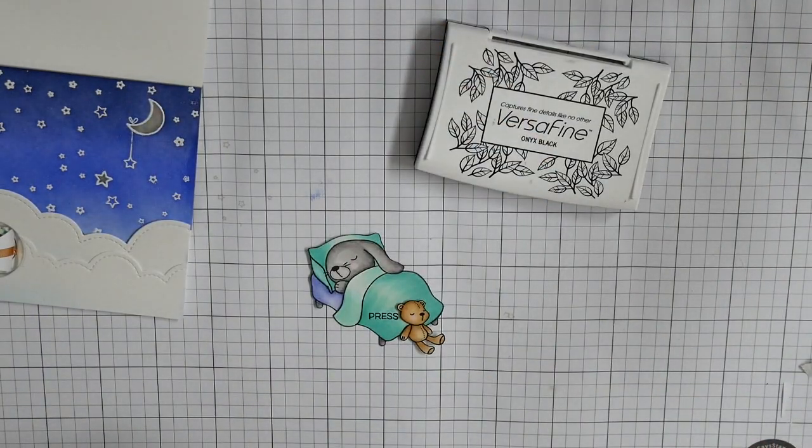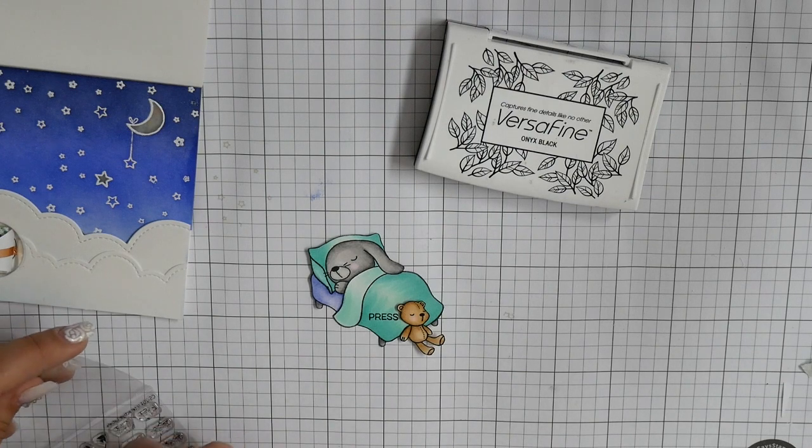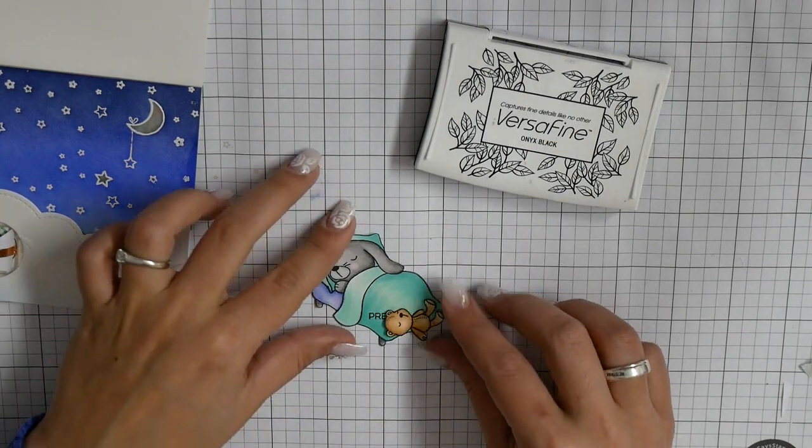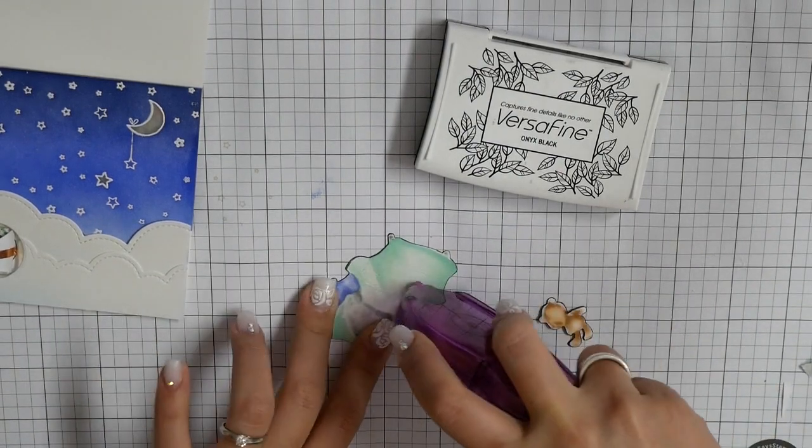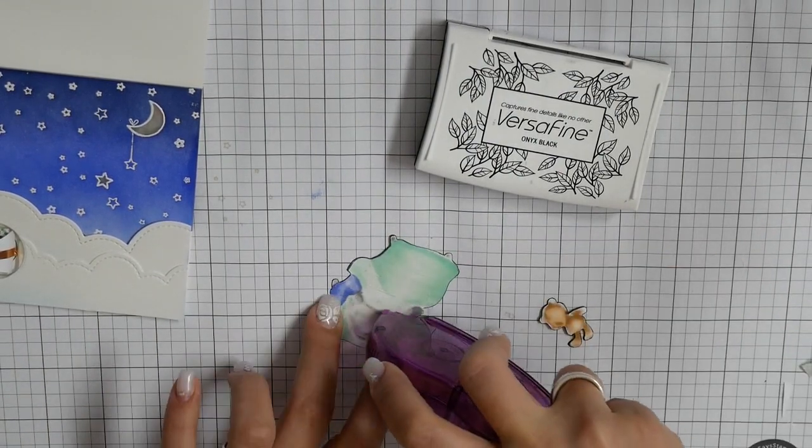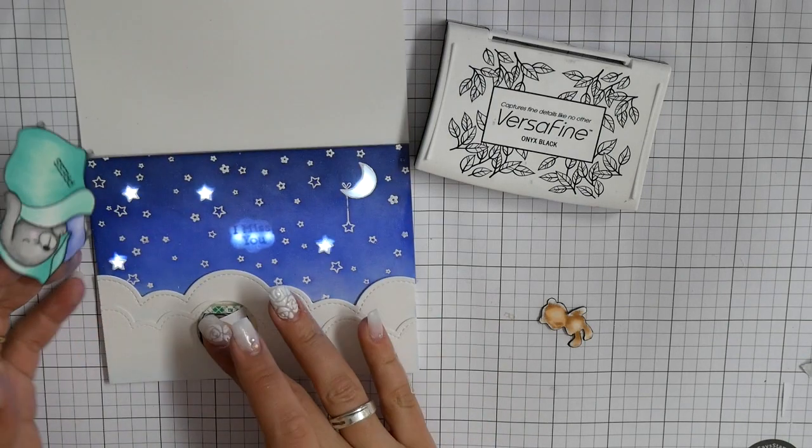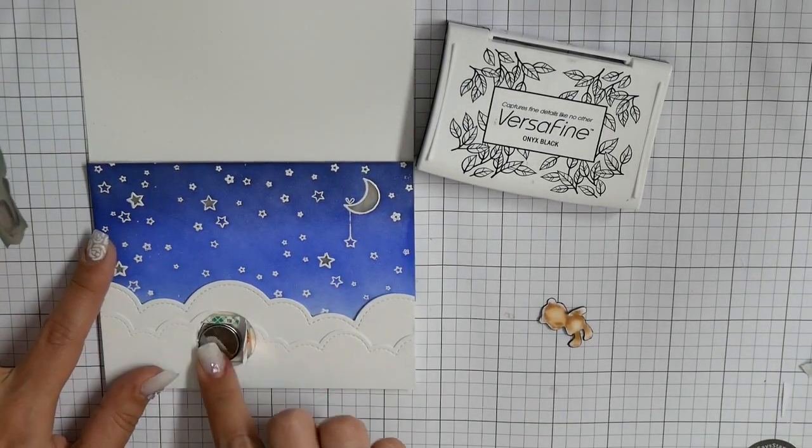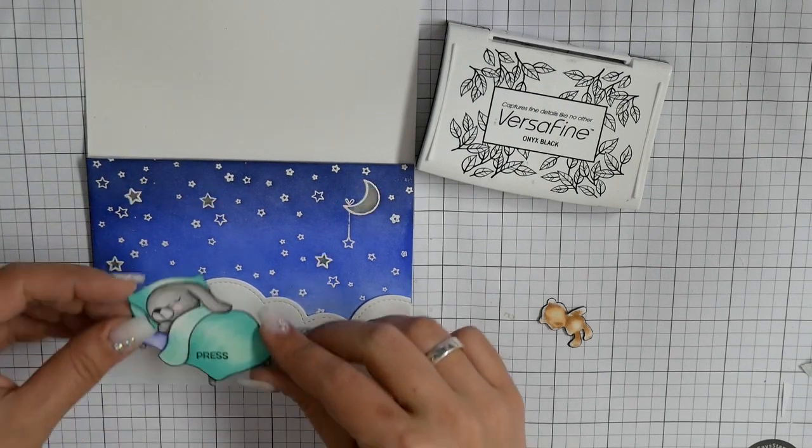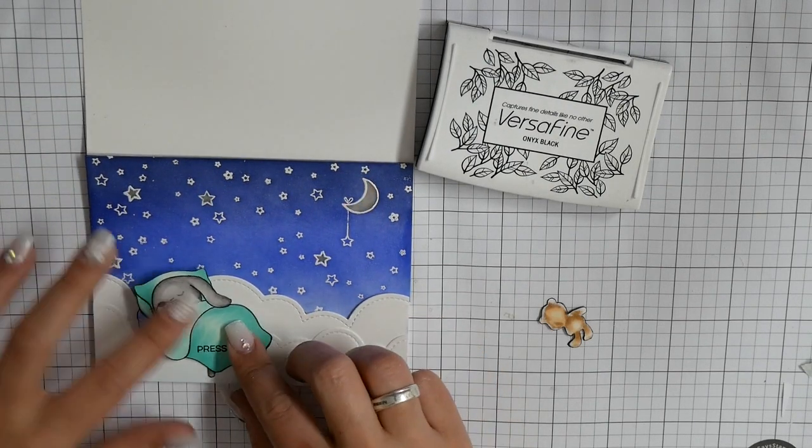And now my card is almost finished. I just have to tape down my images. I like to use here my tape glider because I don't really like liquid glue. I just use it for small images like the teddy bear because I want to avoid the glue sticking to things I don't want to.